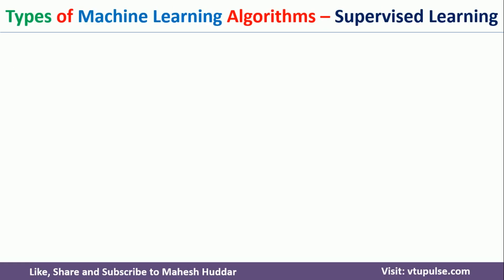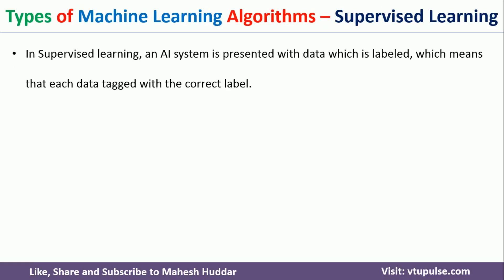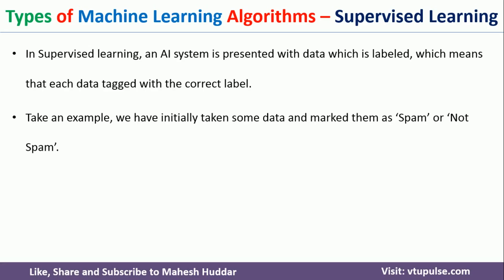The first one is supervised machine learning algorithms. In supervised machine learning, an artificial intelligence system is presented with data that is labeled — that is, each and every example is labeled with the correct value. For example, the first example may be labeled yes, the second yes, the third no, and so on. Each example is given a correct label, and that labeled data is given as input to the AI system.